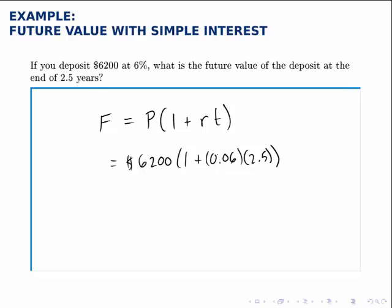Calculate this, multiplying 0.06 times 2.5, adding that answer to 1, and then multiplying that answer by 6,200. And what you find is that F is $7,130.